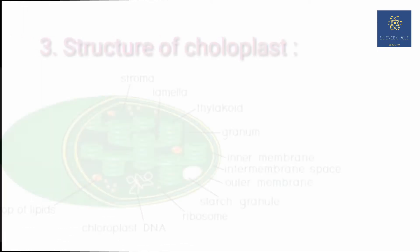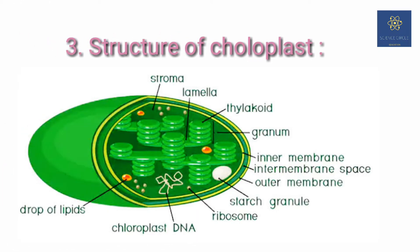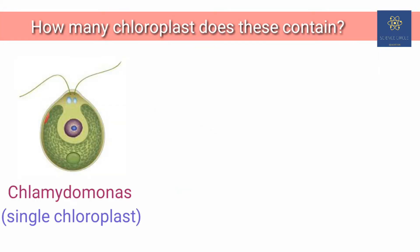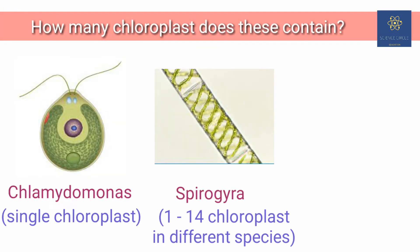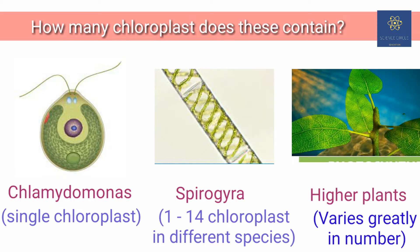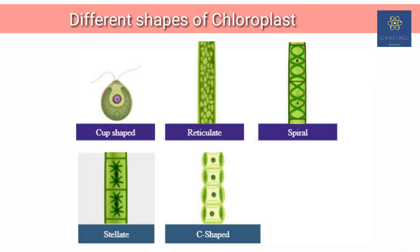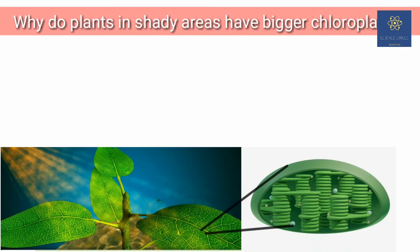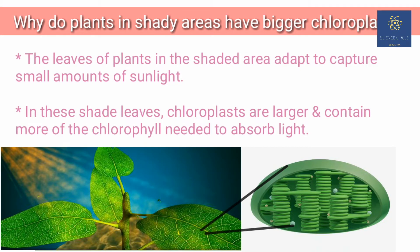Now let's discuss about the structure of chloroplast in detail. The number of chloroplasts varies widely in different plants. In Chlamydomonas, a single chloroplast is present, whereas in Spirogyra it ranges from 1 to 14. But in higher plants, the number of chloroplasts varies from cell to cell — each cell may have 30 to 200 chloroplasts. The shape of the chloroplast will also vary from plant to plant. It is generally 4 to 5 micrometers in size. Plants growing in shade have larger chloroplasts than those growing in intense light.